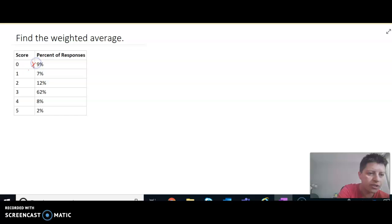So to find the weighted average for something like this, we would simply take the first column times the second. Okay. So let's go ahead and do that. So we would take zero times 9%, which loving that math, just zero because anything times zero, zero, one times 7% is 0.07, two times 12% is 0.24, three times 62% is 1.86, four times 8%, 0.32.